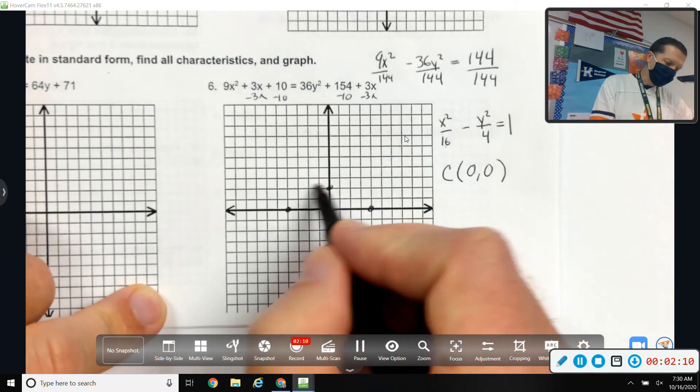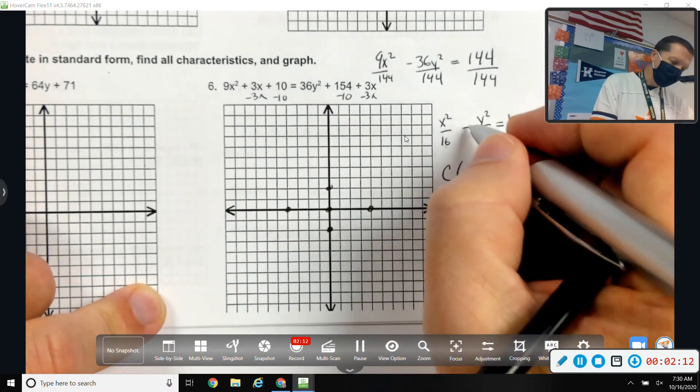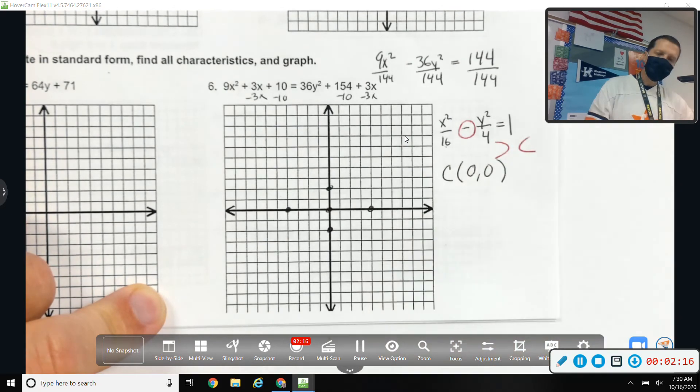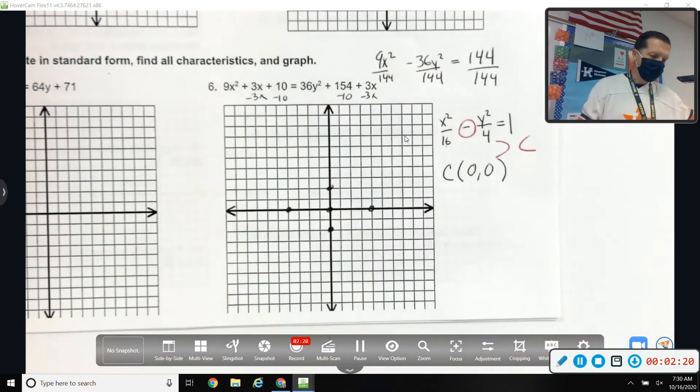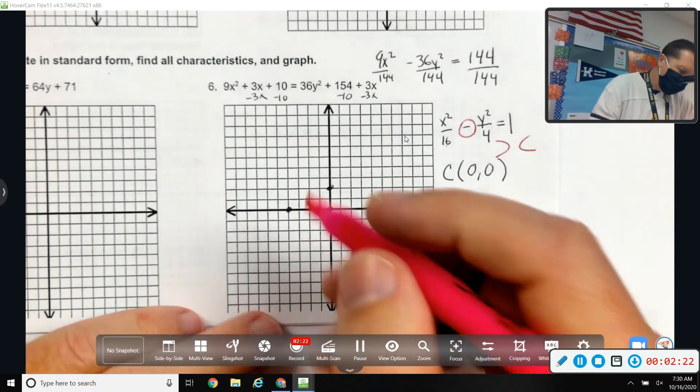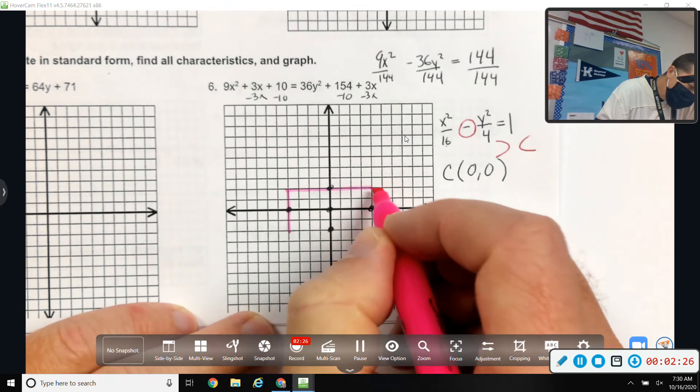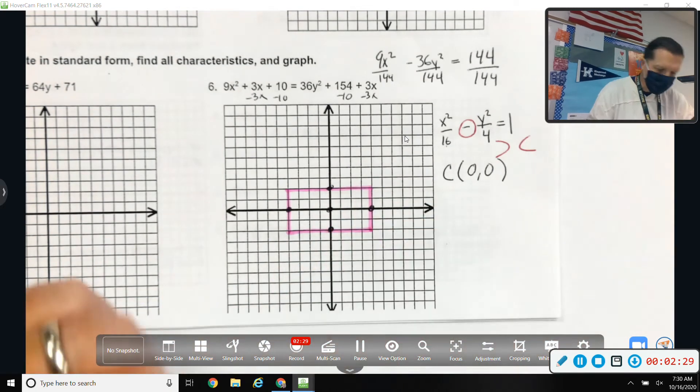Careful, it may be tempting to sketch in an ellipse, but this isn't an ellipse. This is a hyperbola. It's a left and right hyperbola. So, that means I need to draw the box and do the asymptotes. There's the box.